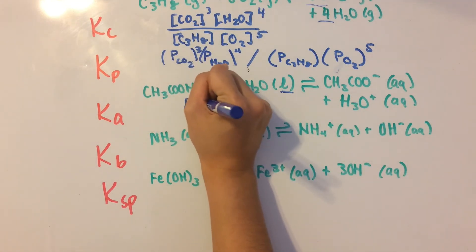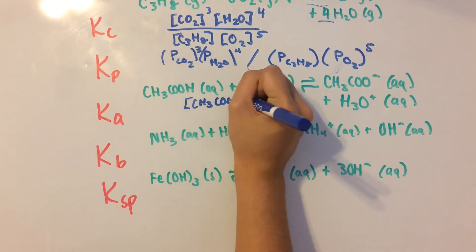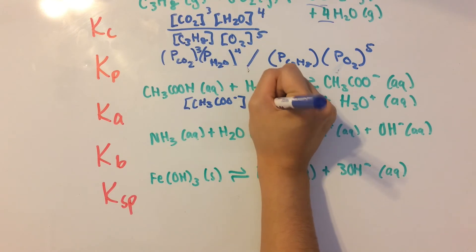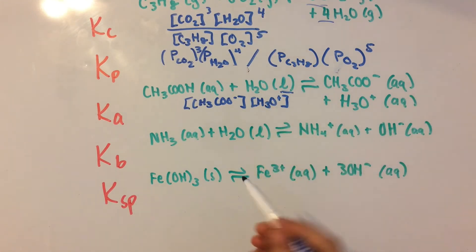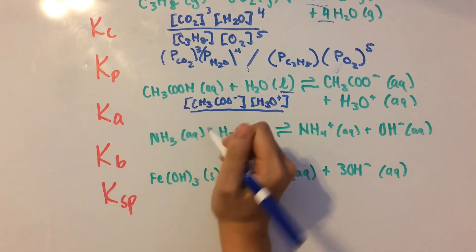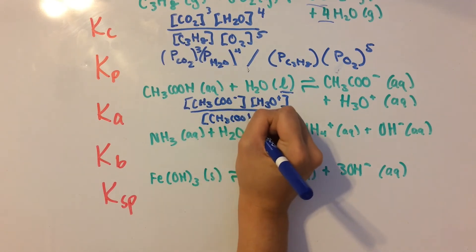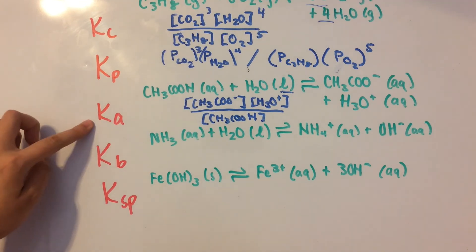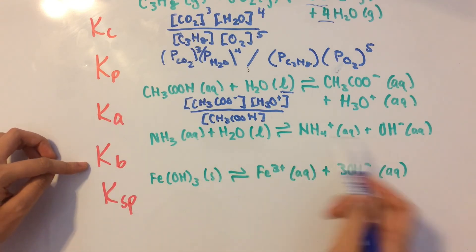So we have CH3COO- and H3O+. There are no coefficients, so we're just going to leave it that way, over acetic acid, so CH3COOH. And that's really all. So remember, Ka is when you have an acid, and Kb is when you have a basic equation.